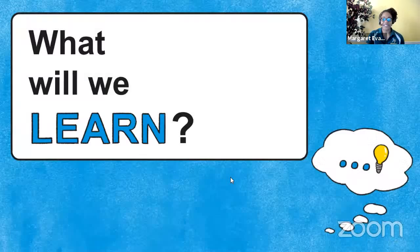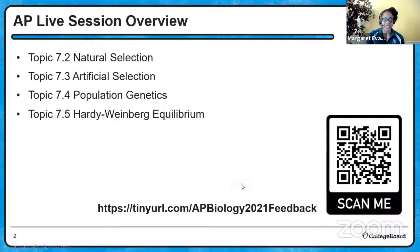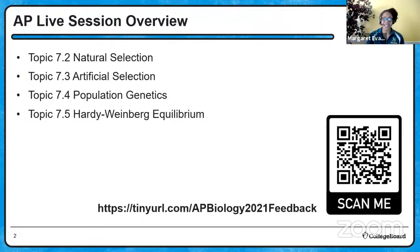So what will we learn today in Unit 7? Unit 7 is a pretty big unit, so we're going to break this down into parts. Remember that this is just an overview, so we're taking some of the most important nuggets of information. Topic 7.2 is going to be on natural selection, 7.3, artificial selection, population genetics, and the good old Hardy-Weinberg equilibrium.